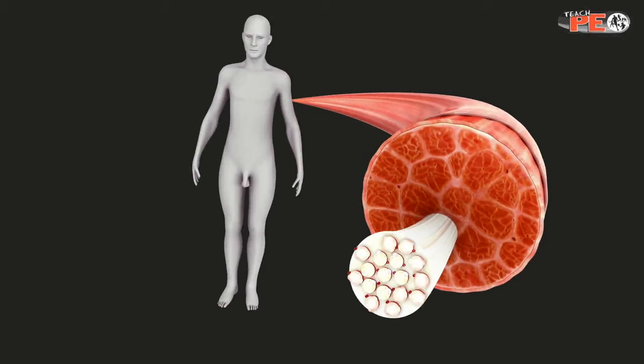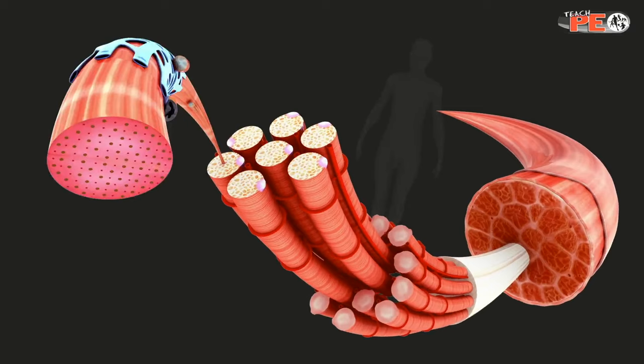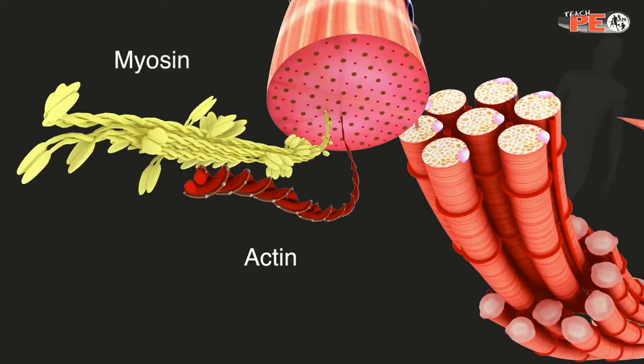Each muscle is made up of a number of bundles of muscle fibers. Each bundle of muscle fibers contains anywhere from 10 to 100 individual fibers. Each muscle fiber itself contains cylindrical organelles known as myofibrils, which themselves are bundles of proteins called actin and myosin.